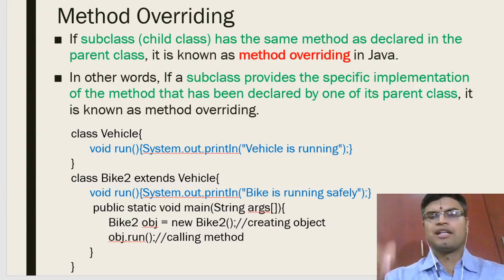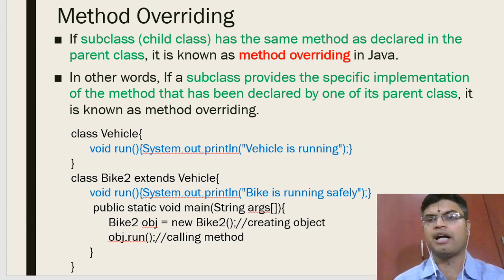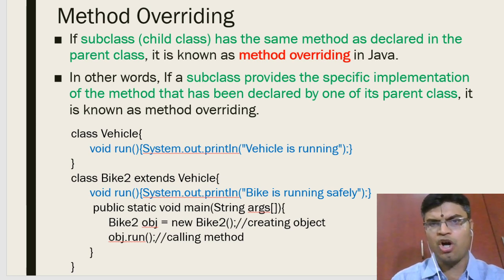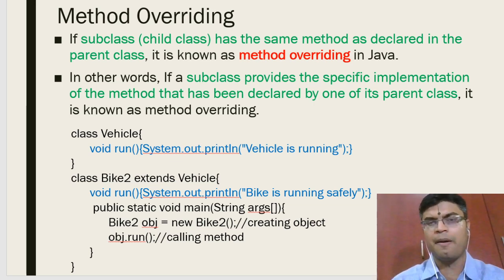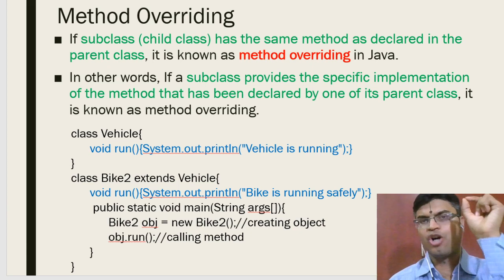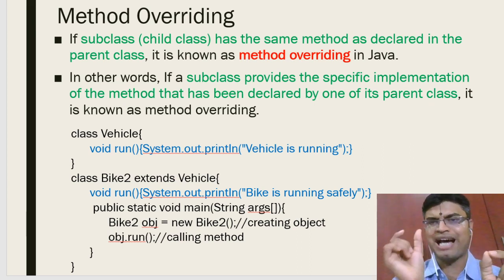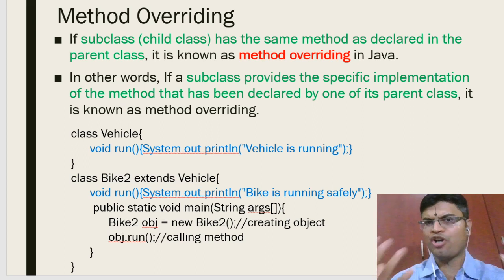We're going to talk about method overriding. Whenever you talk about method overriding in Java, you have a lot of classes, and within each class you have methods and variables. Remember, a method cannot be defined outside a class in Java. Whenever you want to access any method, an object for that particular class has to be allocated space, and using that object you can access the method.